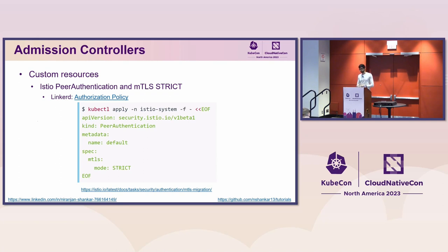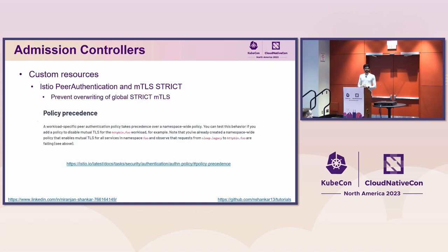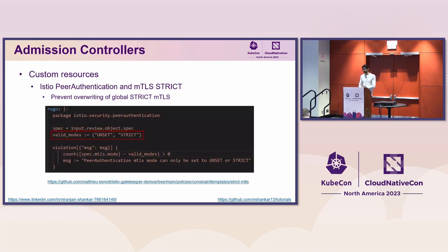One example of a custom resource to subject to these validations is the Istio peer authentication. The peer authentication resource deployed in the Istio system root namespace enforces that workloads across the mesh only communicate through mTLS — good practice after onboarding all applications to enforce that no plain text traffic is accepted. However, it is possible to bypass this global strict mTLS setting on a namespace or workload level, since namespace-level peer authentication takes precedence over the mesh-wide setting. A policy we could write in our Gatekeeper constraint template is to deny peer authentications that could disable global mTLS.